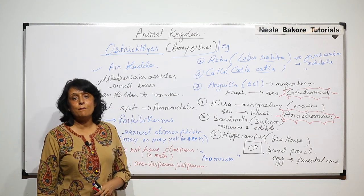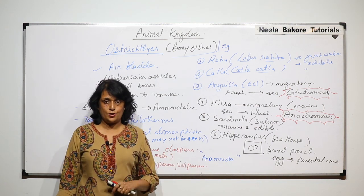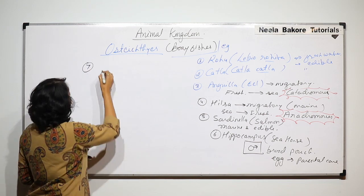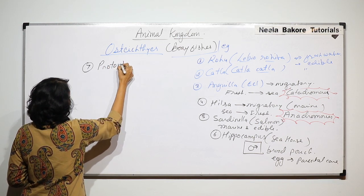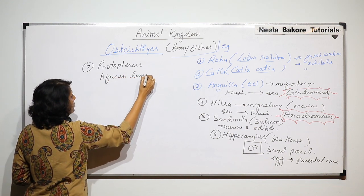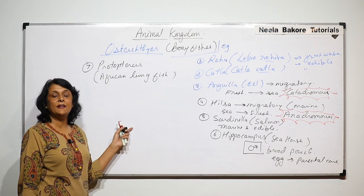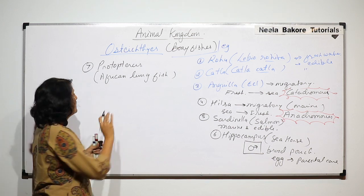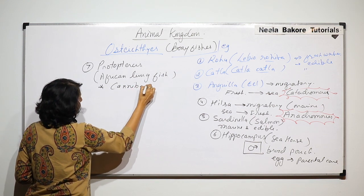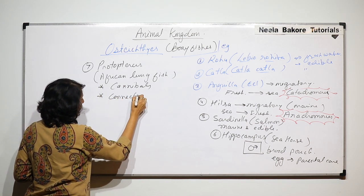We will now look at the lungfish, called Protopterus, commonly known as the African lungfish. As the name suggests, these fishes have lungs for respiration. These fishes also show cannibalism — they are cannibals. Most importantly, they are considered a connecting link.